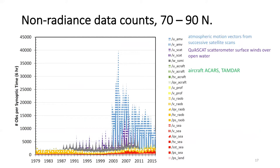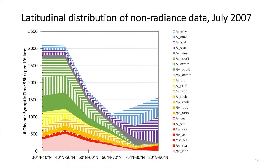Atmospheric motion vectors have been a predominant data source, waxing and waning over time. But these typically pick up high or mid-level clouds, sometimes low clouds, but often not right near the surface where you want the data. The rawinsonde data diminishes in the 1990s, consistent with that Soviet network. Looking at how observations are distributed across latitude bands, you note the general paucity in the Arctic. There is more bounteous data in the mid-latitudes, obviously, with more population and more planes flying across those areas.